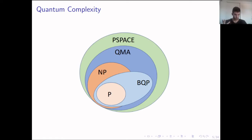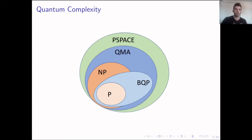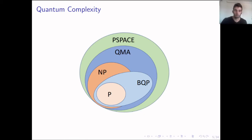I've been talking about zero knowledge for NP statements. NP is a complexity class that contains all the decision problems where, if the answer is yes, we have proofs that are verifiable in polynomial time by a deterministic Turing machine. But there are also other complexity classes, and we can consider the quantum analog of NP, which is QMA, or Quantum Merlin Arthur.